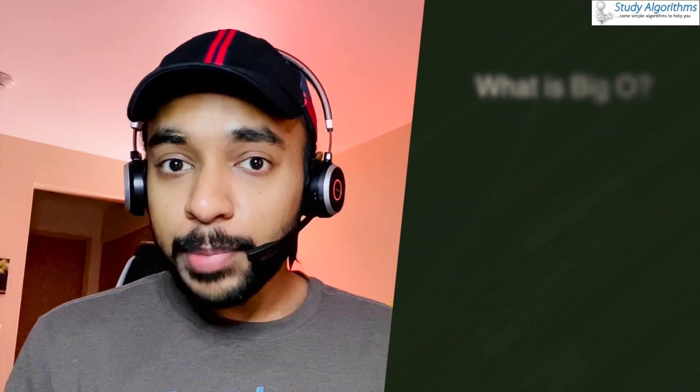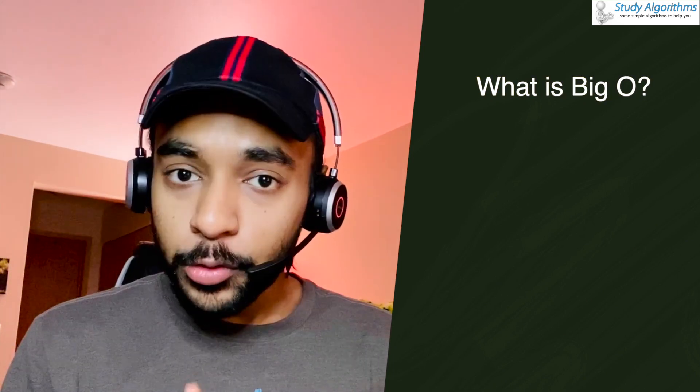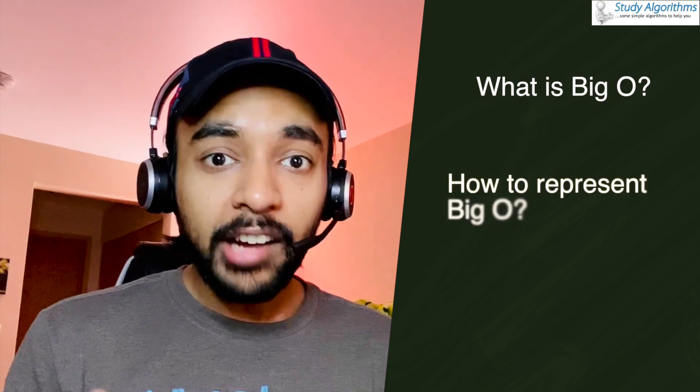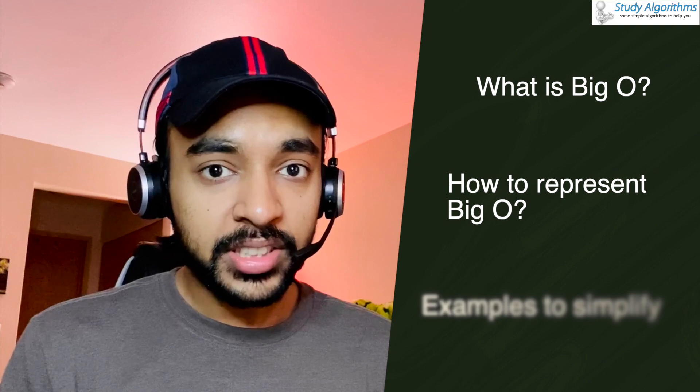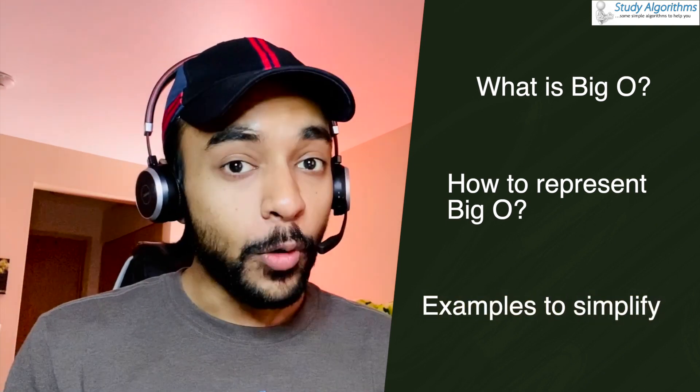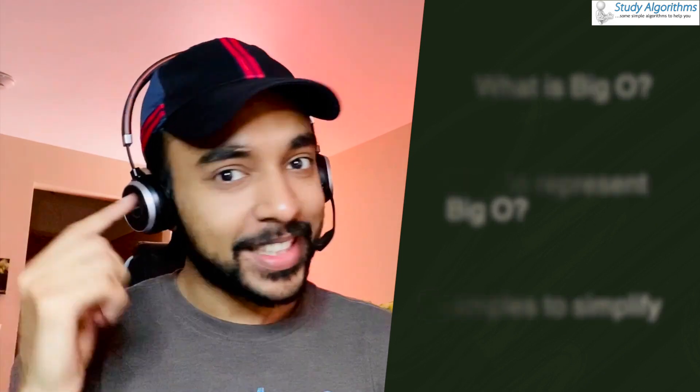The beauty of understanding anything as a child is that you absorb all the knowledge as a sponge without overcomplicating it. First, I will explain you what you mean by the big O notation. Then I will show you some of its representations and its examples. So without further ado, let's get started.